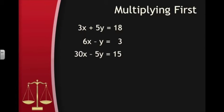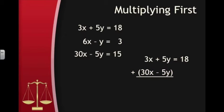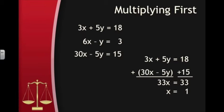When we add the equations together this time, notice the y's on the left-hand side of the two equations now have opposite coefficients and will cancel out to 0, leaving only a 33x on the left side — from adding 3x plus 30x. Adding the right sides of the equations together gives us 18 plus 15, which is 33. So now we have 33x equals 33, an equation with only one variable, so we can divide both sides by 33 to get x equals 1, which is the x coordinate of our solution.